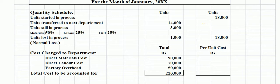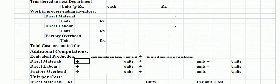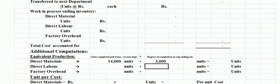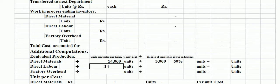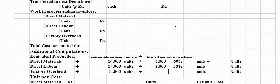Now we move to the fourth section — additional computation — in which we find equivalent production for materials, labor, and factory overhead. 14,000 units are completed and transferred to the next department; 3,000 units are still in process with a degree of completion of 50% for materials. For labor and factory overhead, 14,000 units are transferred and 3,000 are in process at 25% completion.